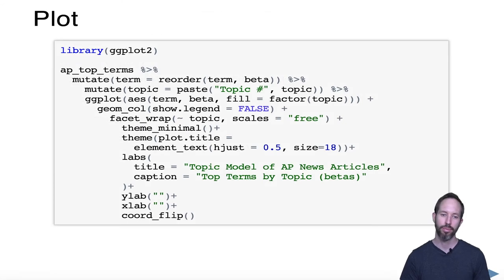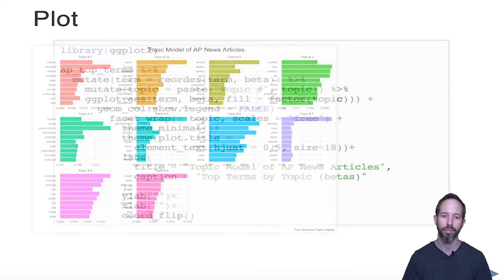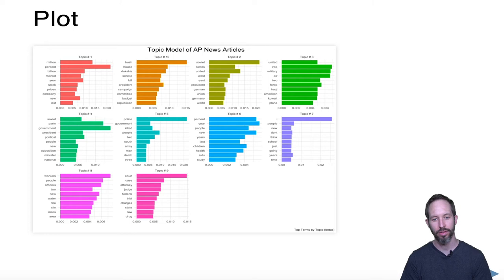With a ton of ggplot, a lot of aesthetics, renaming some stuff, flipping the coordinates, labeling some stuff, we come up with this graph. What this graph shows you is the top 10 words associated with each of our 10 topics, and they're each colored differently.